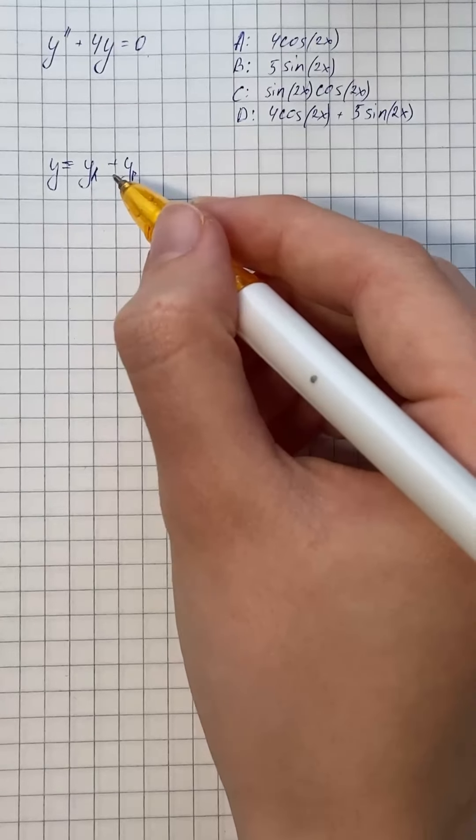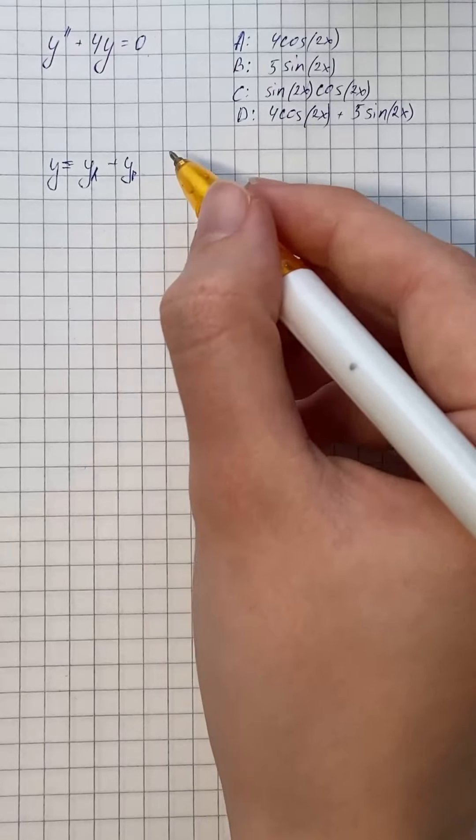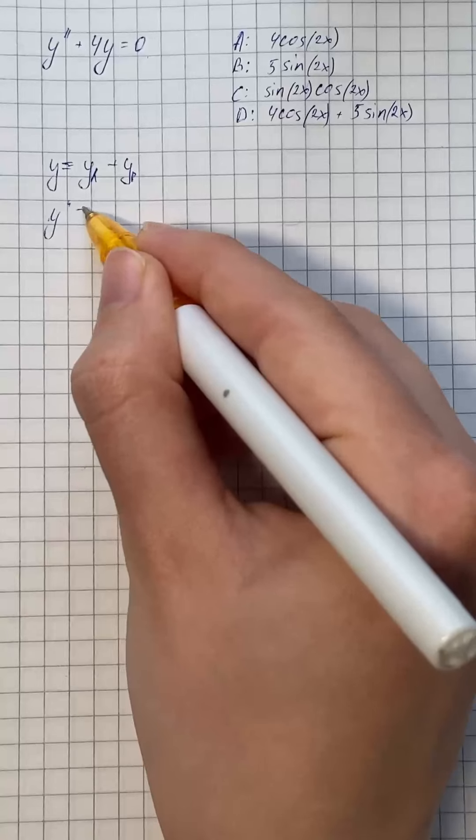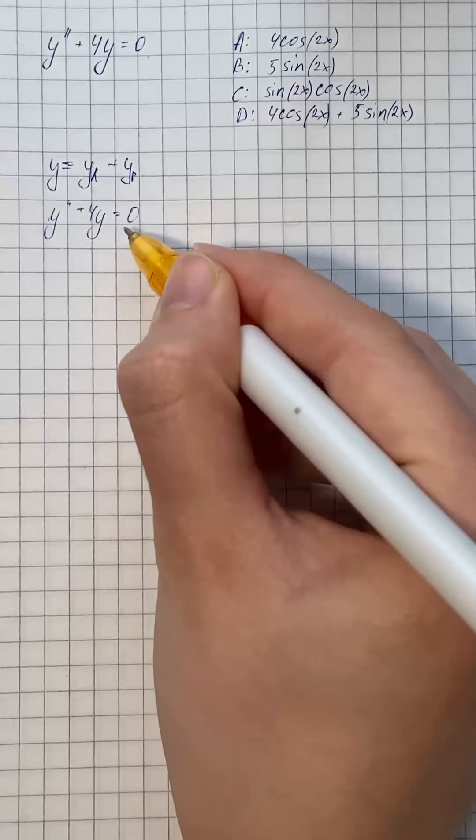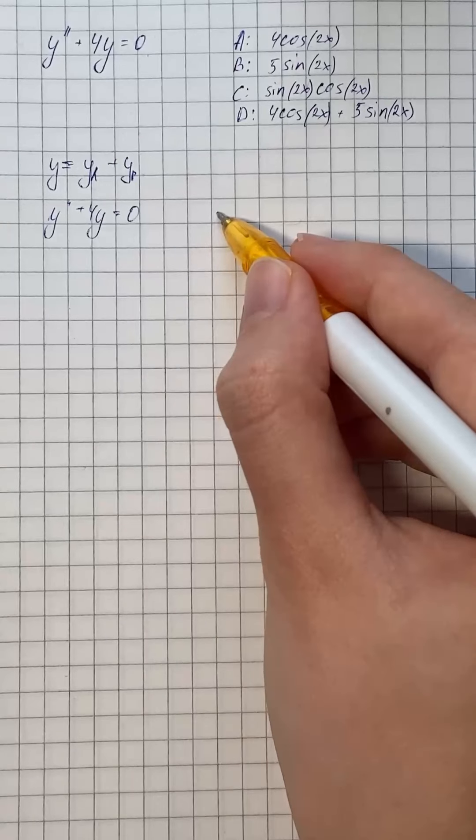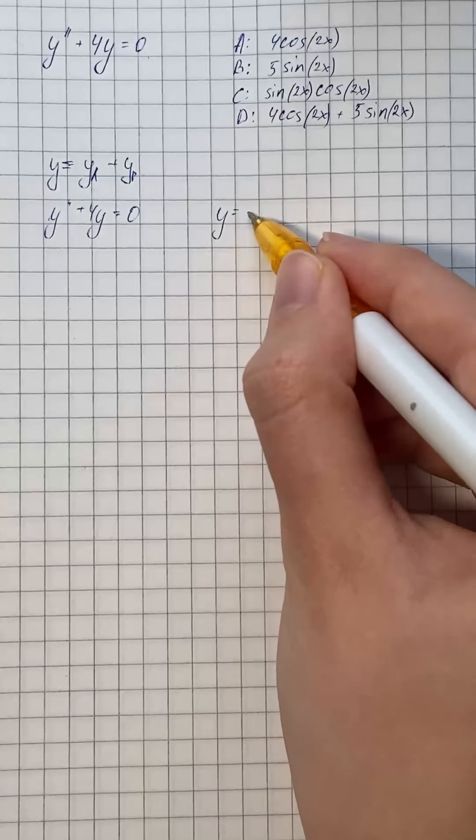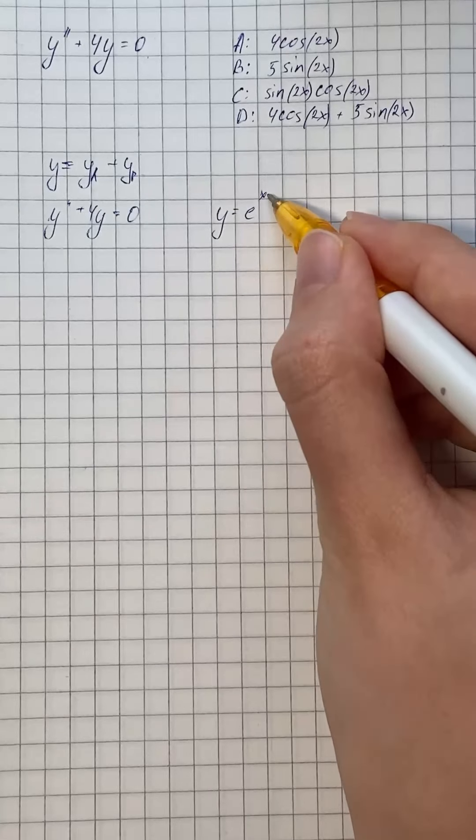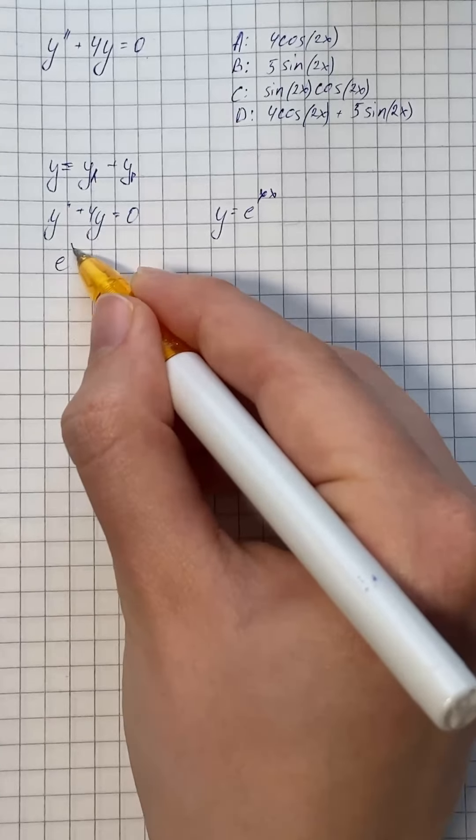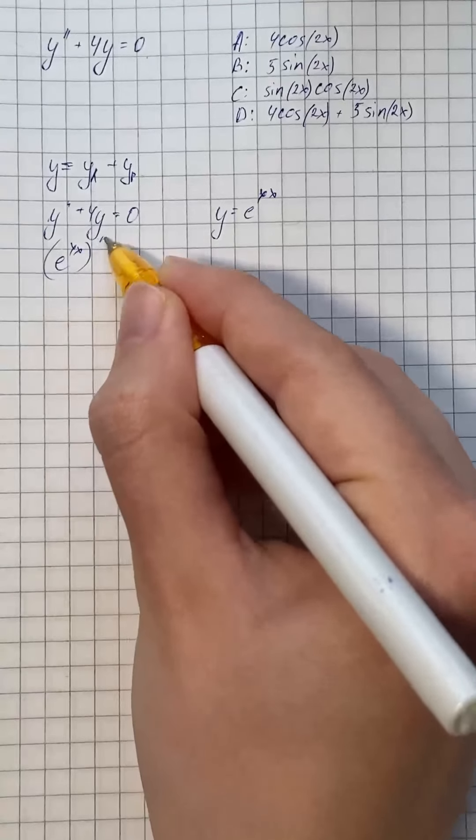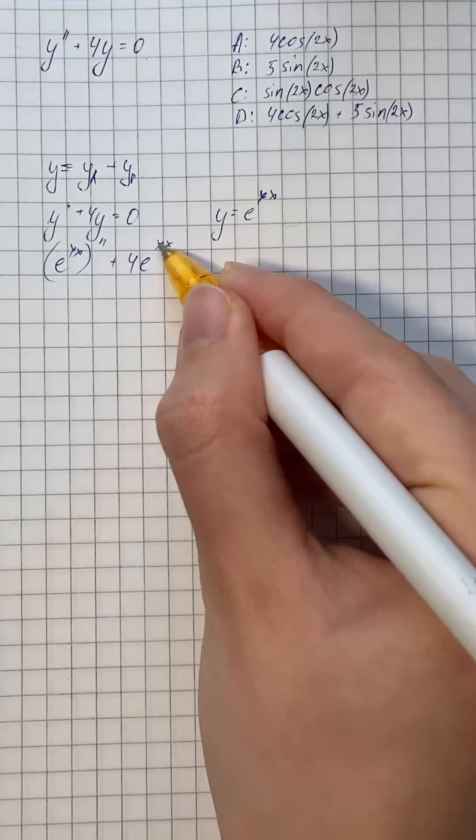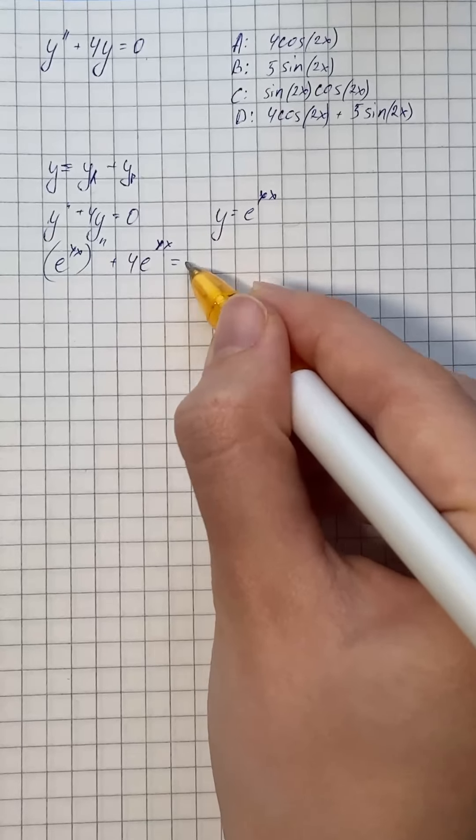So we're going to start with complementary solution, which is, for the given equation, y double prime plus 4y equals 0. And we're going to rewrite the equation with y equals e to the power of gamma x. So we get e to the power of gamma x double prime plus 4e to the power of gamma x equals 0.